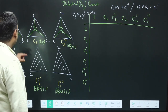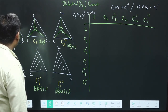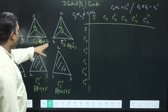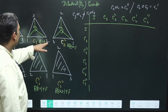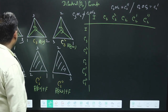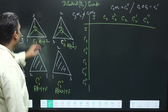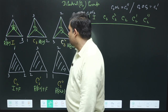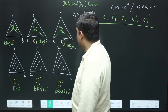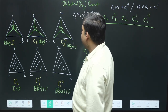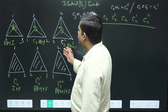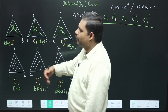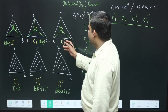The second element is a rotation of 120 degrees, denoted C3. After this rotation, corner 3 moves to the position of 1, and corner 2 moves accordingly, giving a new configuration. The third element is a rotation of 240 degrees, denoted C3², which is equivalent to applying C3 twice.